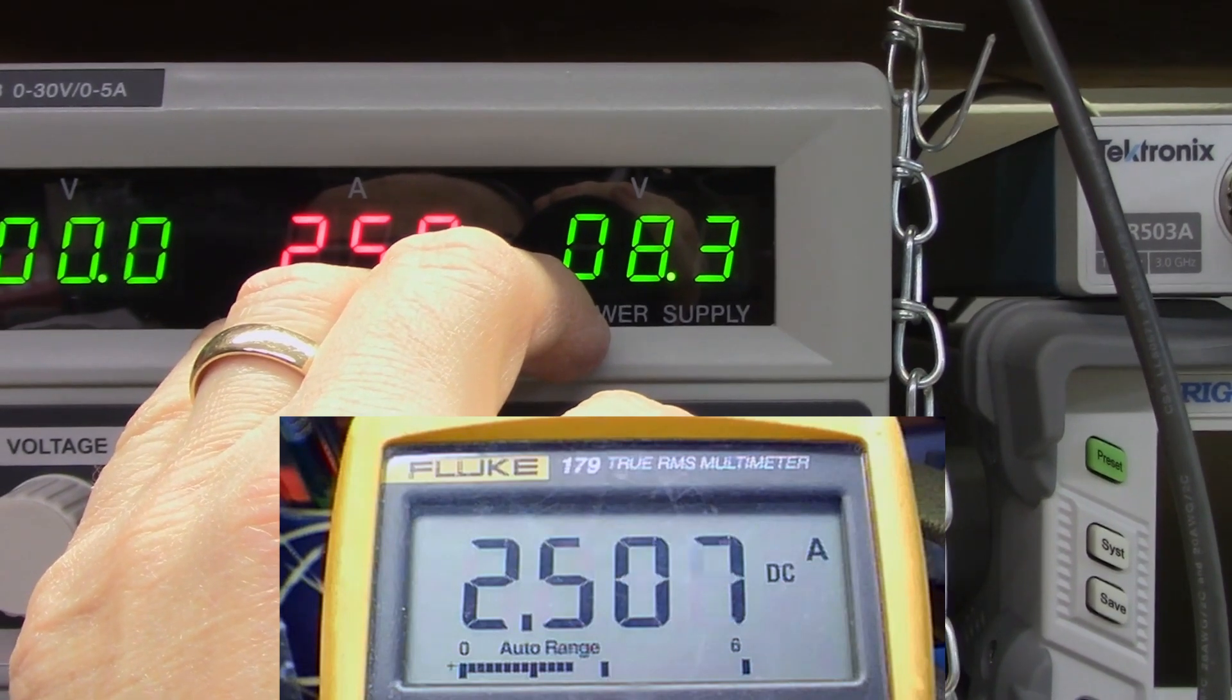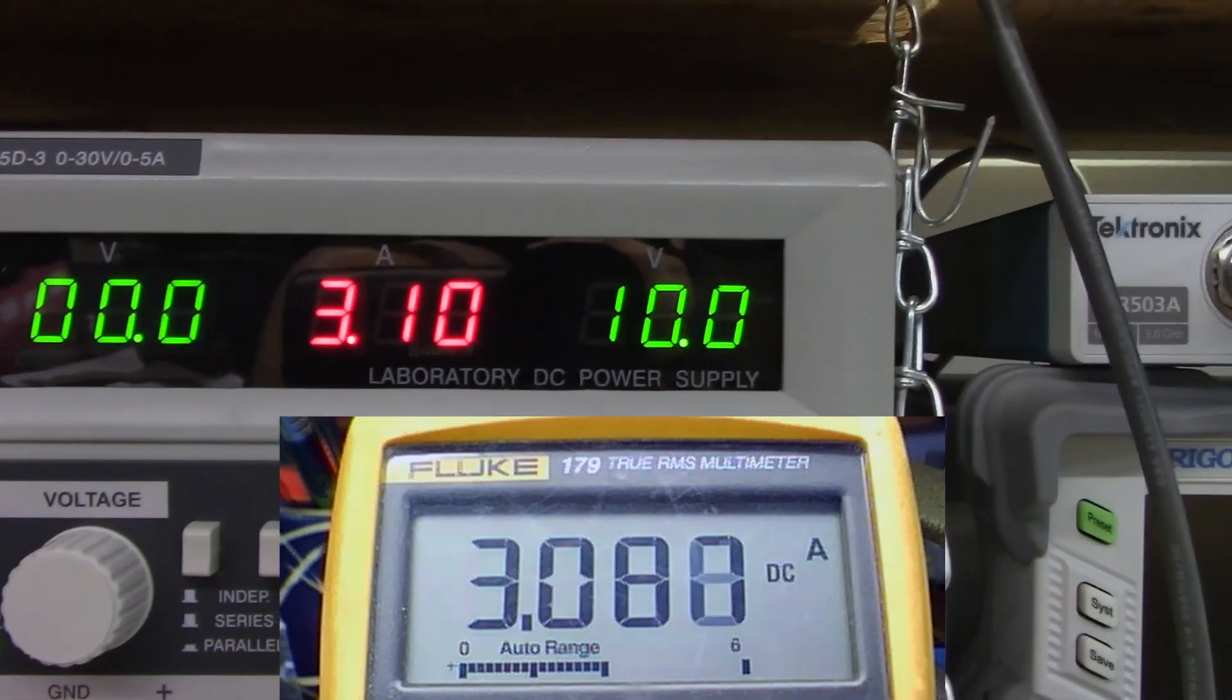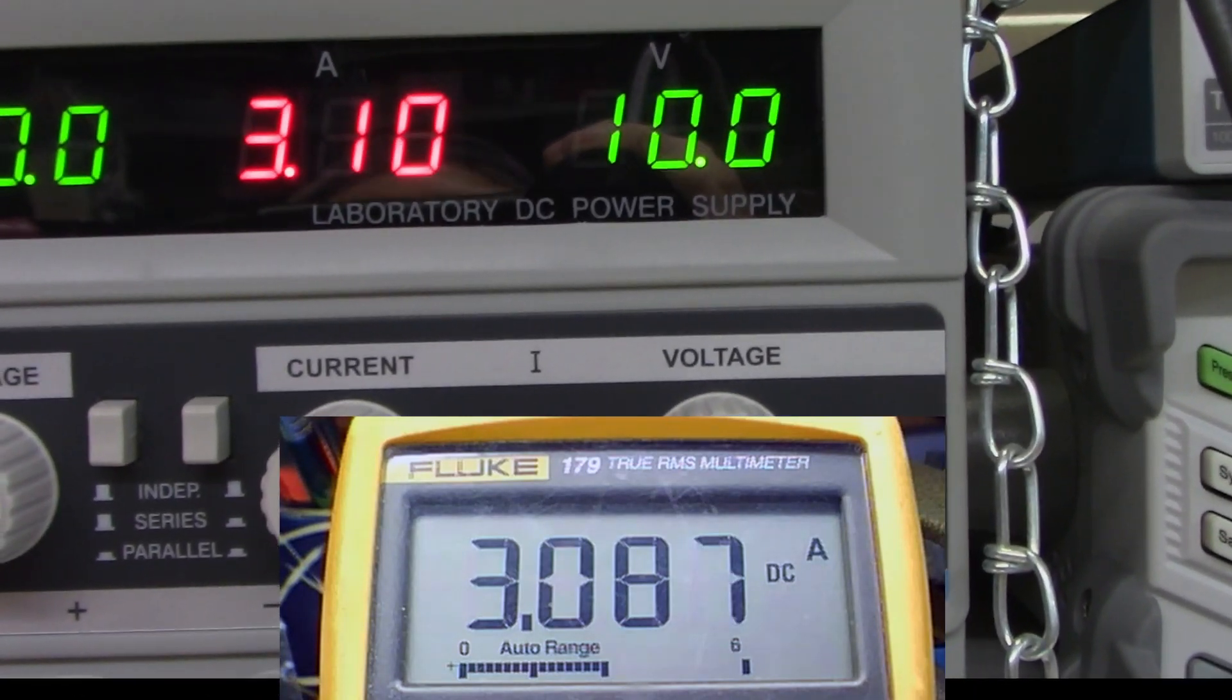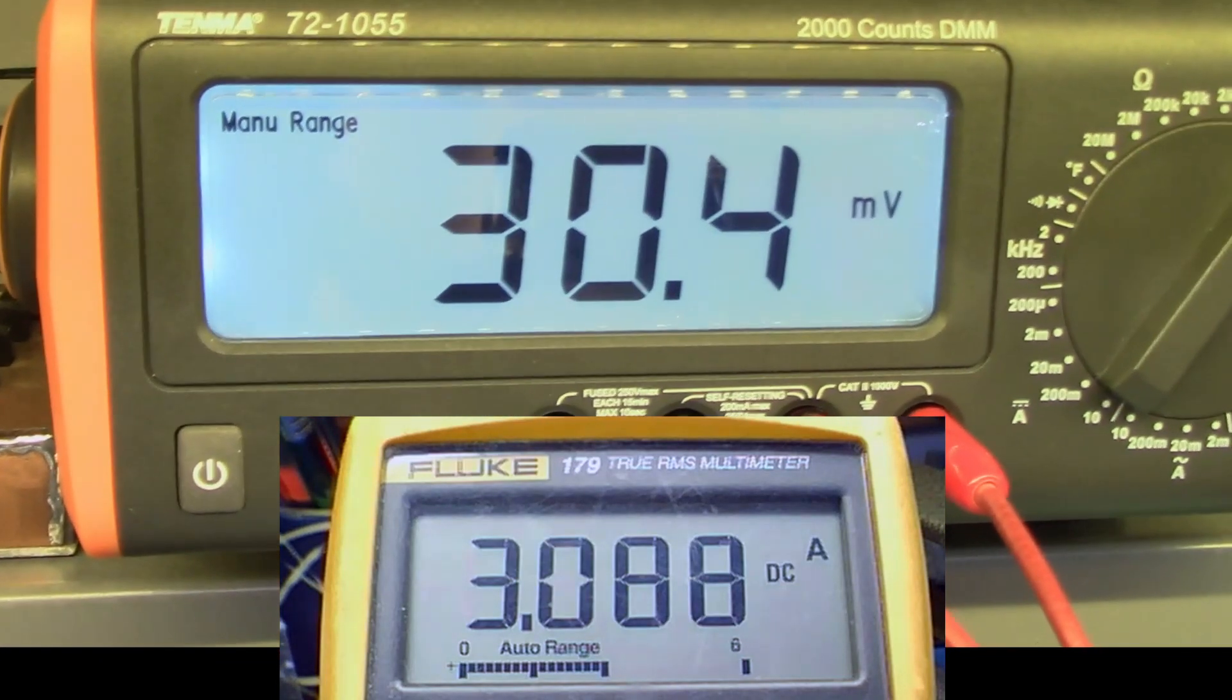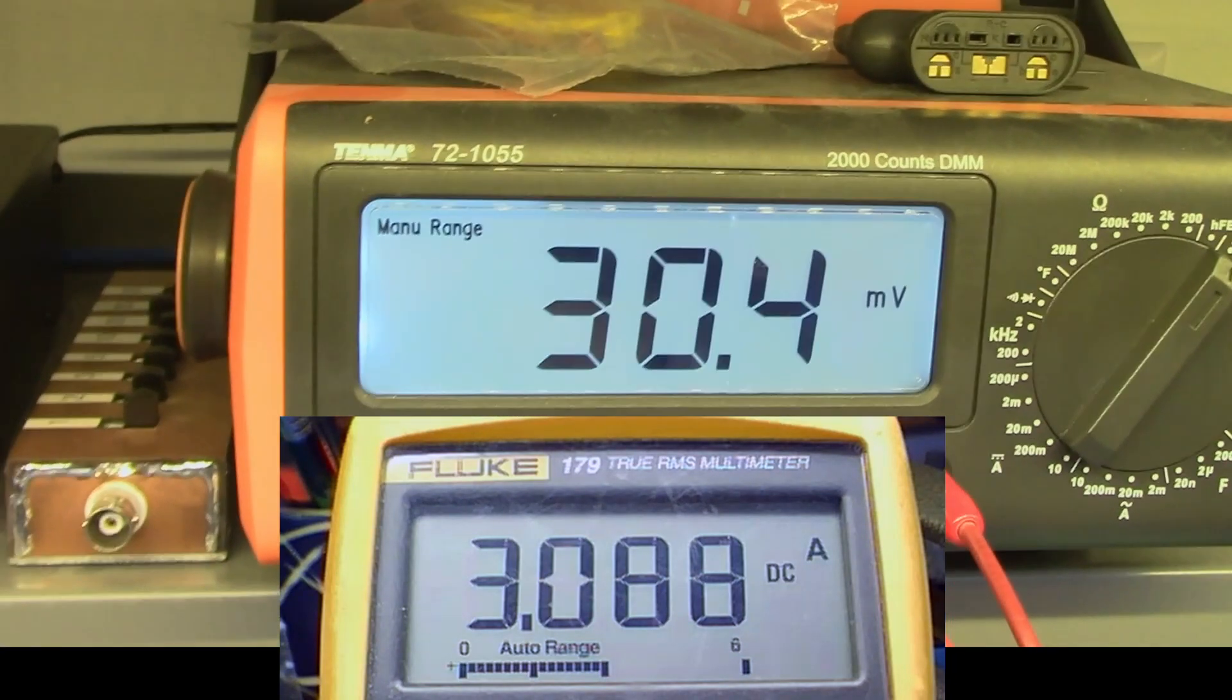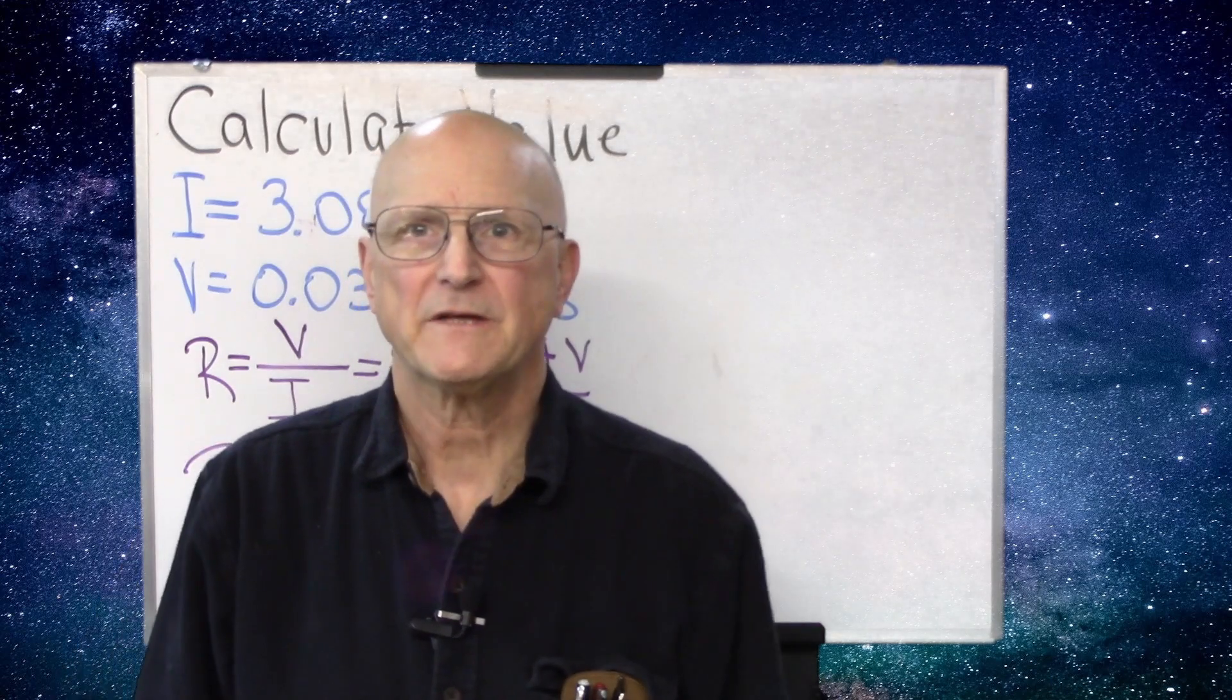And so here I am up 2.5 amps. And we've hit just about 10 volts. So at this point, we're going to write down two values. The current value, which is 3.088, and the 30.4 millivolts. And from these two values, we can calculate the resistance of our resistor.